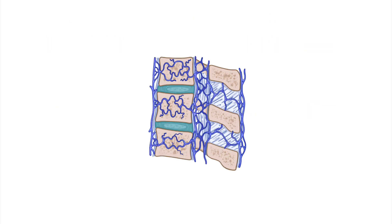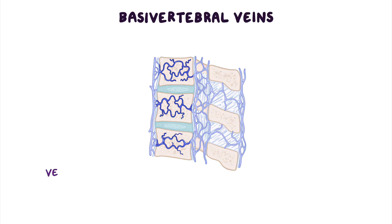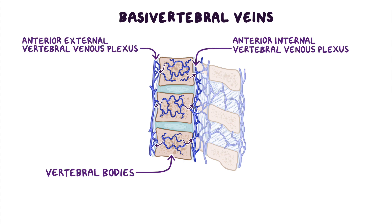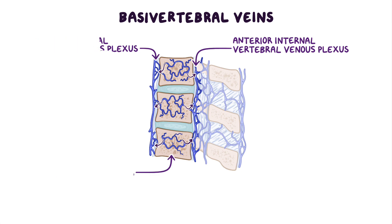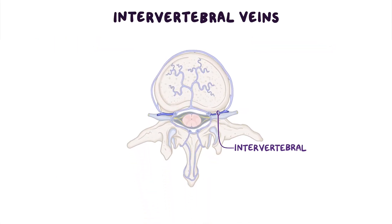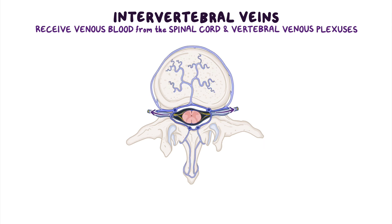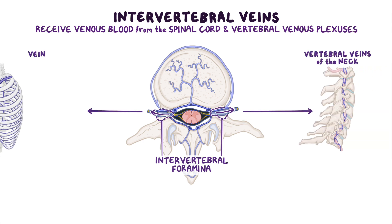Next are the large basal vertebral veins, which drain the vertebral bodies. These veins emerge from the small foramina on the surfaces of the vertebral bodies, and drain into both the anterior internal and anterior external vertebral venous plexuses. Finally, the intervertebral veins receive venous blood from the spinal cord and vertebral venous plexuses. Taking the same path as the spinal nerves, they exit the spinal canal through the intervertebral foramina, draining into the vertebral veins of the neck and the segmental veins of the trunk.